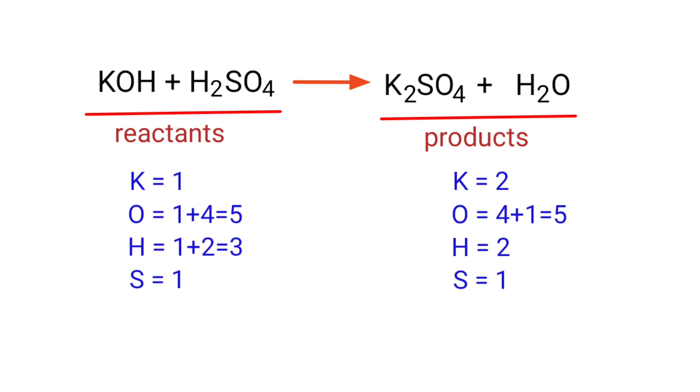The number of atoms are not balanced on both sides. To balance the chemical equation, we need to make use of coefficients. A coefficient is a number that we place in front of a chemical formula.